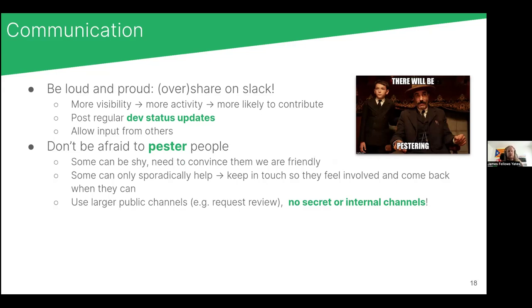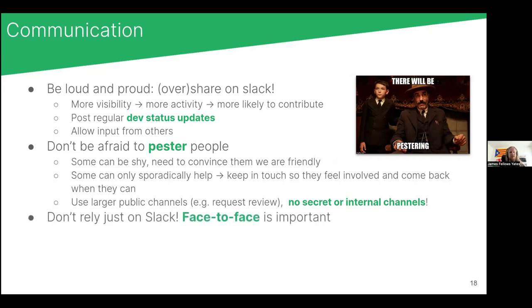Use the larger public channels — like pr-review — and avoid secret or internal channels as much as possible. We've noticed in some pipelines that the developers have their own private Slack channel and end up in an echo bubble, to the point where some don't even check the public channel anymore — which is really bad for bug reports. Using public channels shows activity, shows openness to development, and keeps people willing to help maintain the pipeline. Don't rely just on Slack — real-time face-to-face communication is very important.